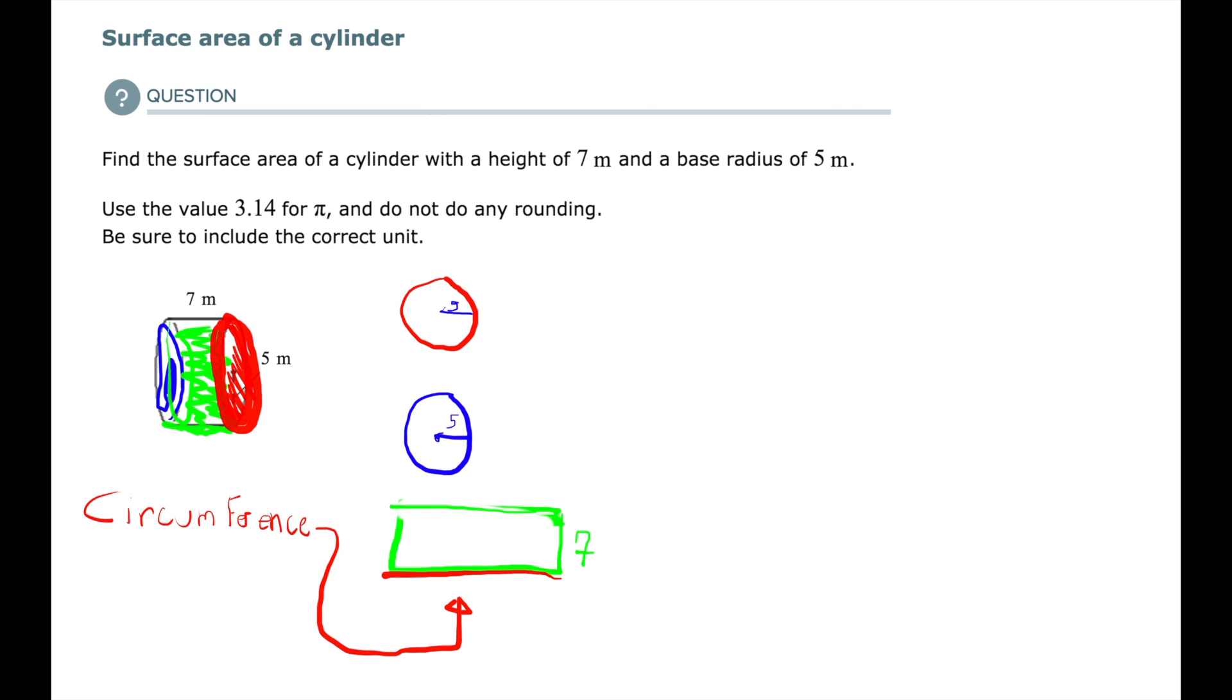How do we find circumference? We have to take the radius, times it by two, which in this case is 10, and times it by pi. In this case, we're going to approximate that with 3.14. So that means my width is 31.4 units.